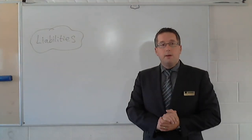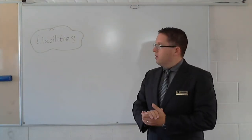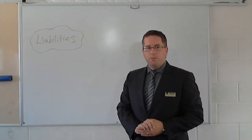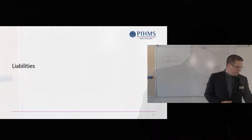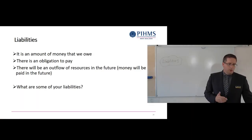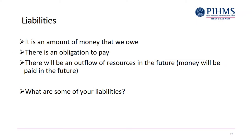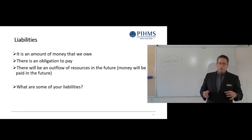Our next element - we've done assets, completed those, now we move on to liabilities. When you think about liabilities, we get into things that you owe to other people. It's an amount of money that we owe to other people, there's an obligation to pay it, and there's going to be some sort of outflow of resources - money's going to be paid out in the future.